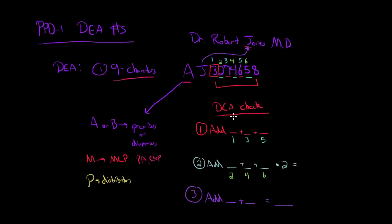So how do you do a DEA check? You're going to add, in order here, one, three, and five from the DEA. And that gives you 16.